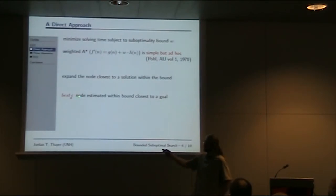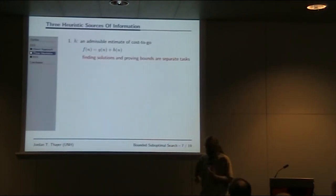What I'm proposing is an algorithm which expands the node closest to a solution within the suboptimality bound. If this is what bounded suboptimal search is trying to do, this is what the algorithm needs to do. I'm going to call that node best d-hat. More formally, best d-hat is a node we estimate to be within the bound, and of all nodes estimated to be within the bound, it's as close to a goal as we can get, or as close to a goal of all open nodes.